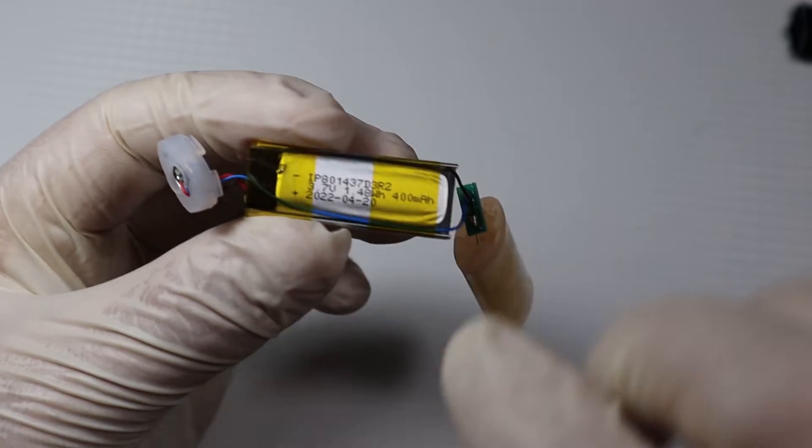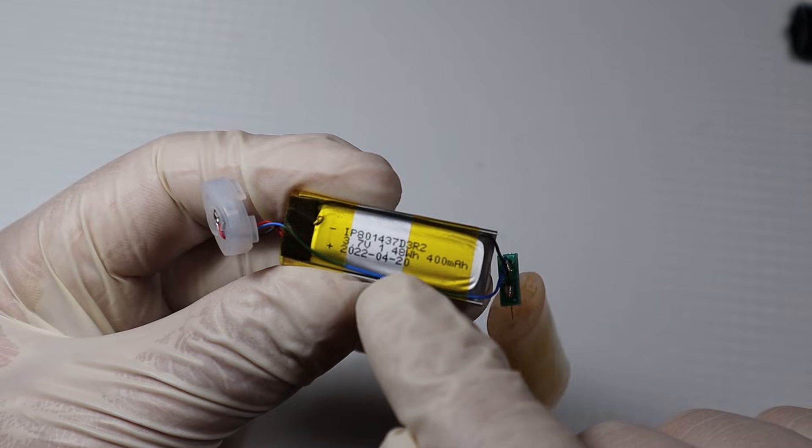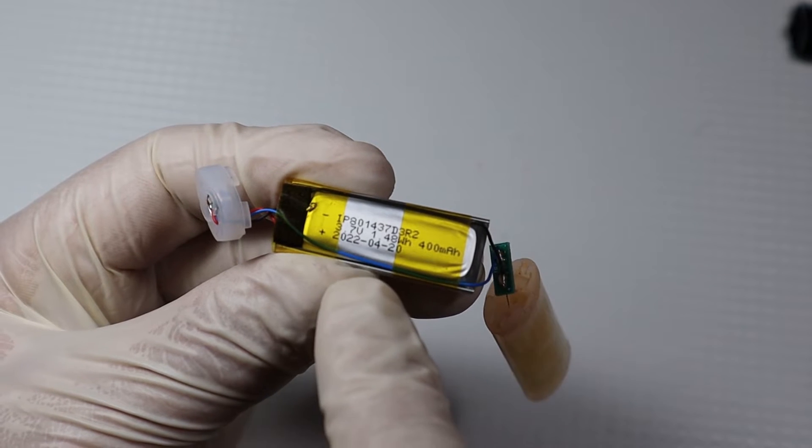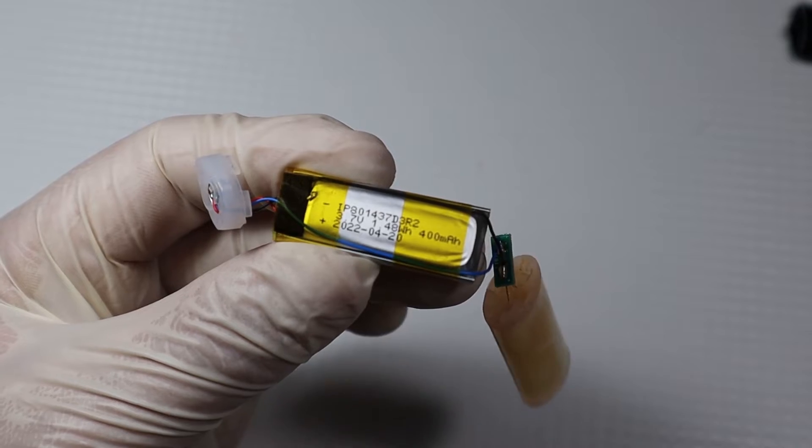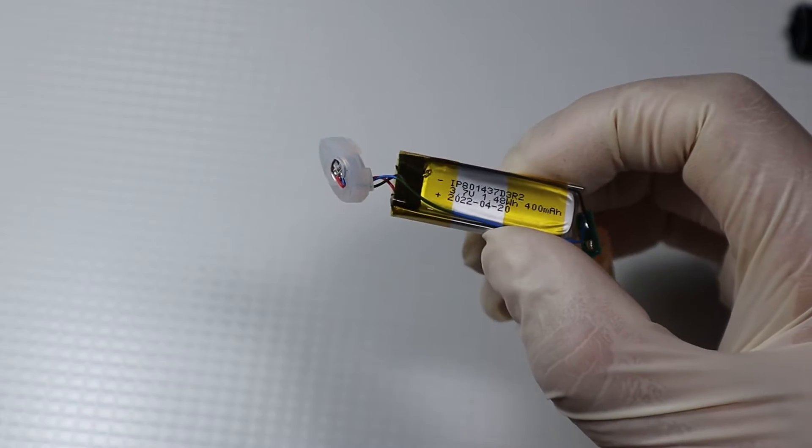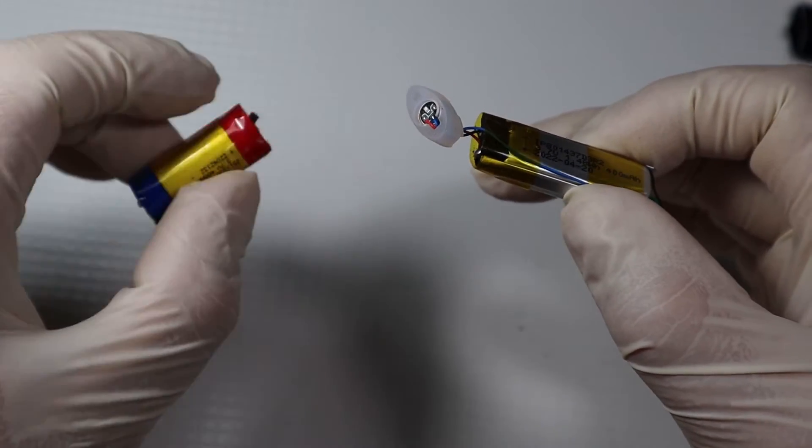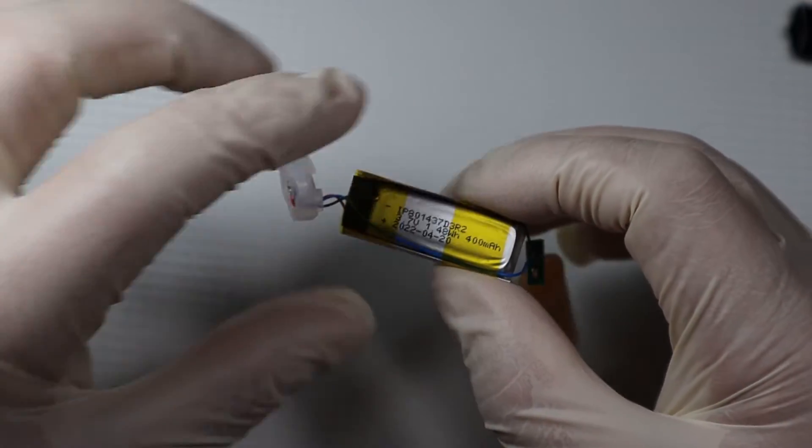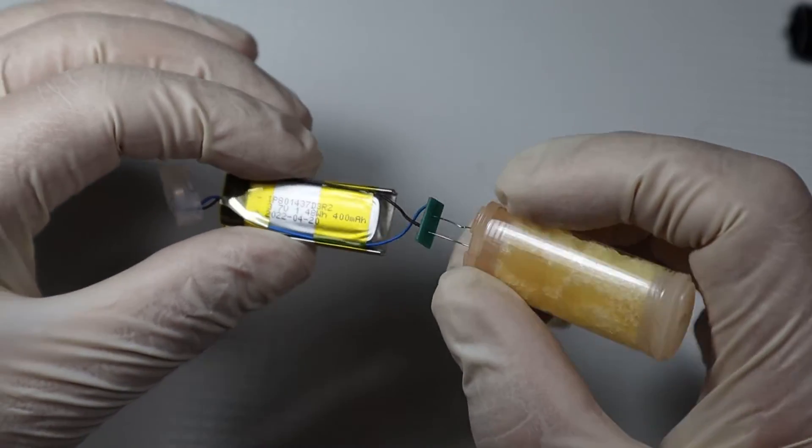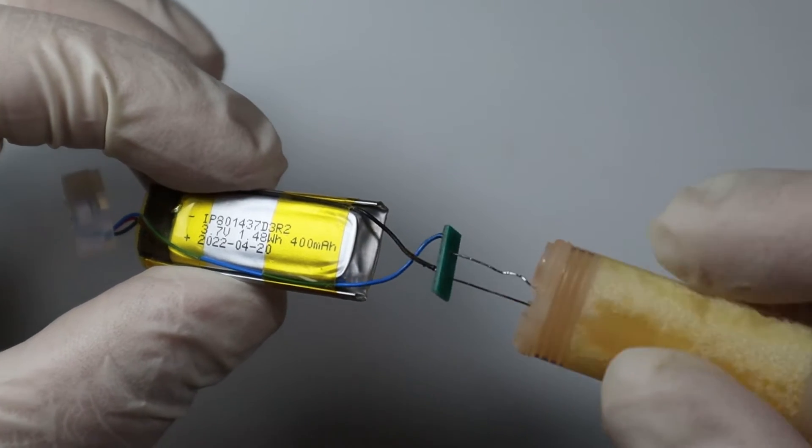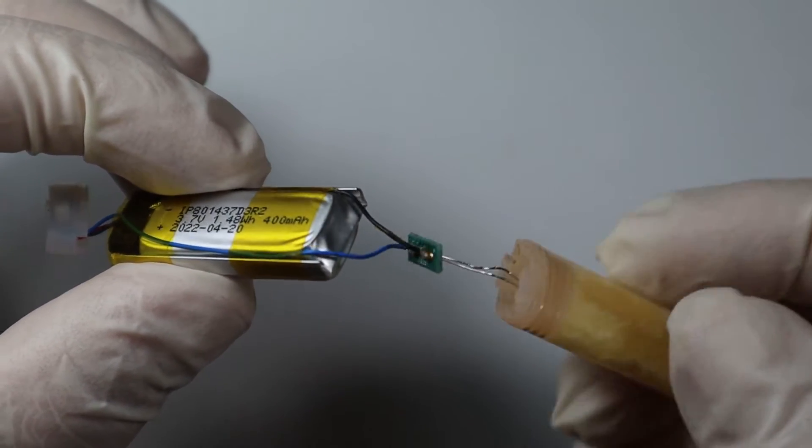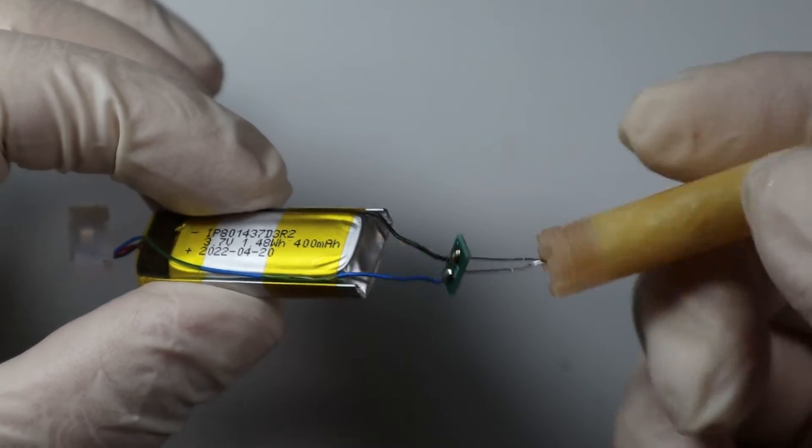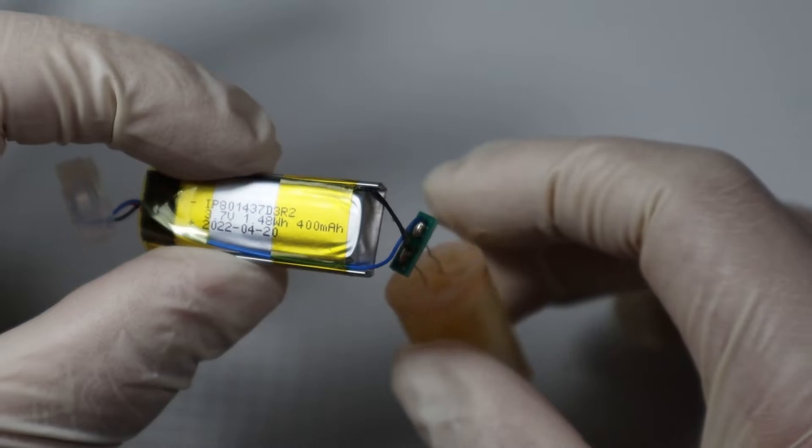What do we have here? We have an IPAT 1437 D3 R2, again 3.7 volt, 1.48 watt-hours, 400 milliamps, date of manufacture 2022 April 20th. On this one, unlike the other which had positive and negative on separate sides, we have positive and negative both coming in on the same side. The wires and heating element are actually on their own PCB—the wires come to a PCB which is basically a breakout that ensures there is no short circuit inside when assembling. The reservoir with the liquid is here. We don't need that, so I'm going to cut it off.